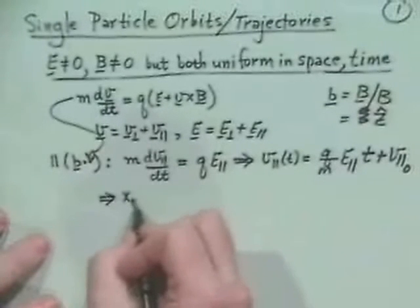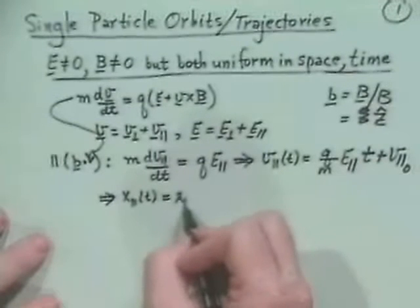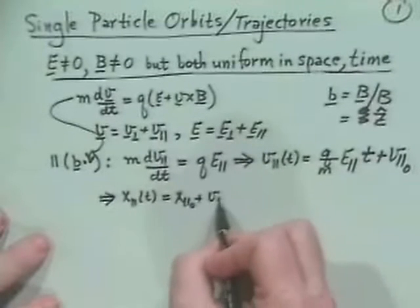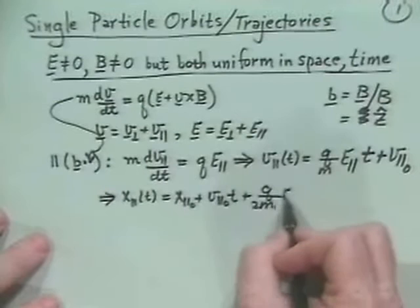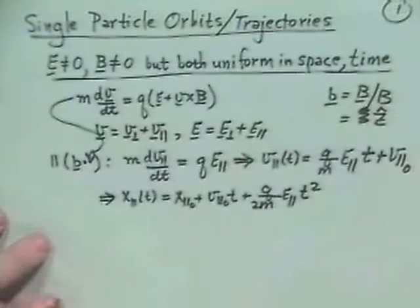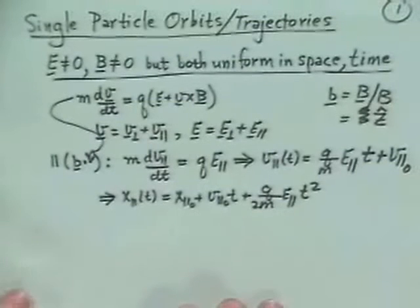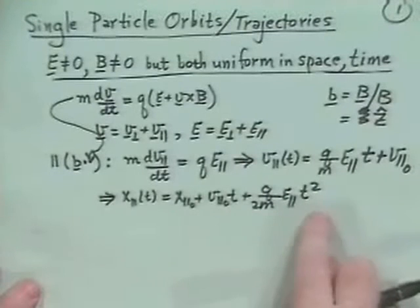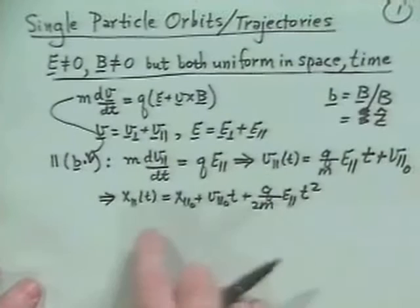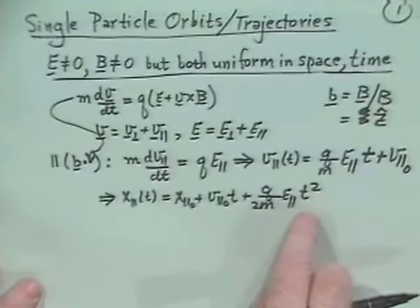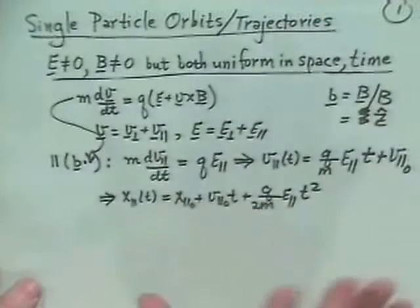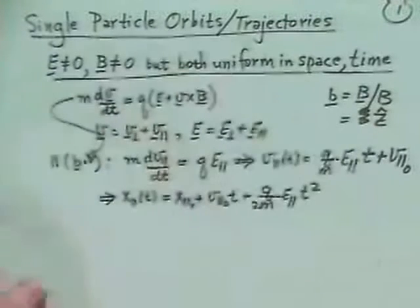Integrating once more gives the traditional equation: position along a field line is the original position plus initial velocity times time plus the acceleration due to the electric field times T squared. That took care of the parallel equation of motion — essentially the same as when we didn't have a magnetic field at all. With a homogeneous magnetic field, the motion along the field line is more or less just free motion.